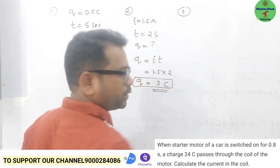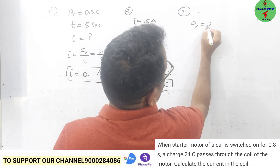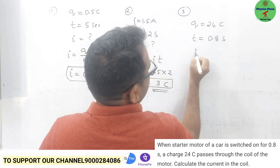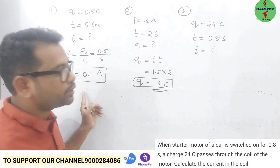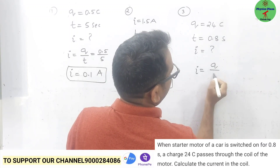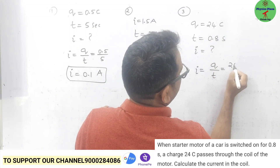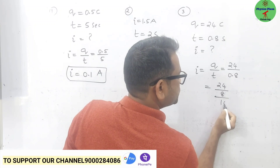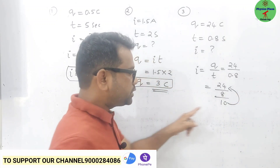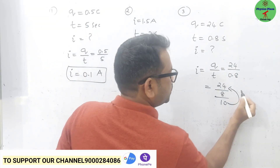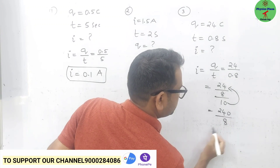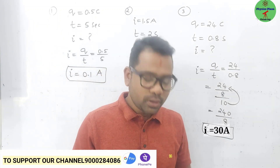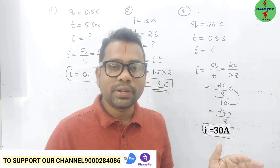Third numerical: a charge of 24 coulombs is flowing in a time of 0.8 seconds. They are asking us to find the current. Using I = Q/T: I = 24 / 0.8. We write 0.8 as 8/10, so this becomes 24 × 10 / 8 = 240 / 8 = 30 ampere. These are the 3 numericals in unit A.